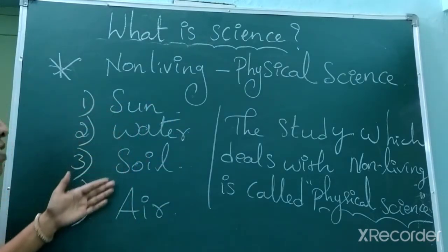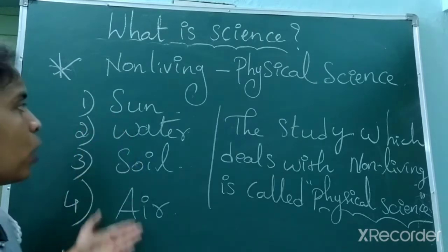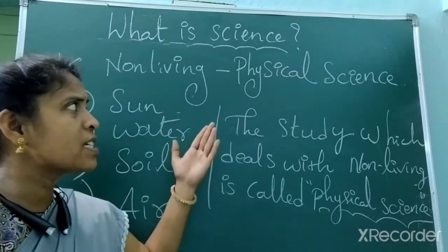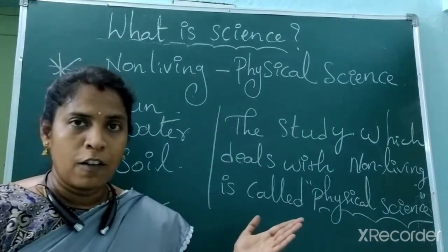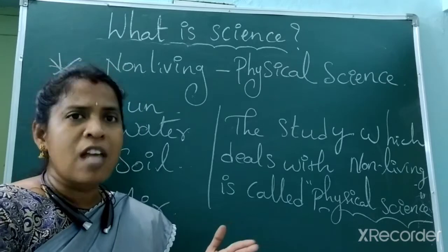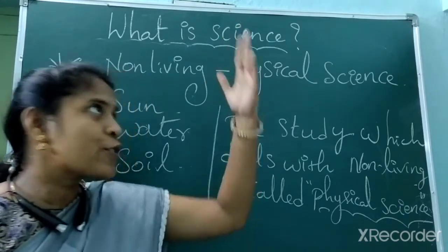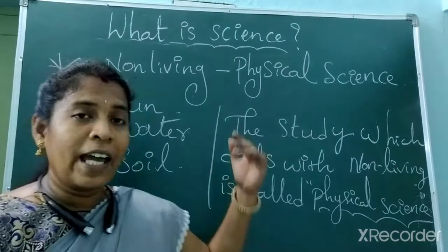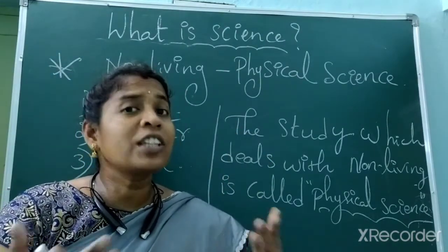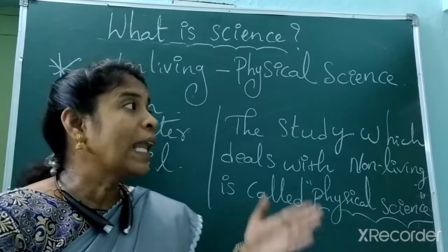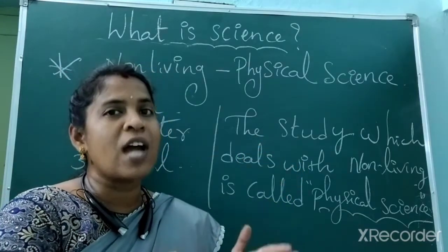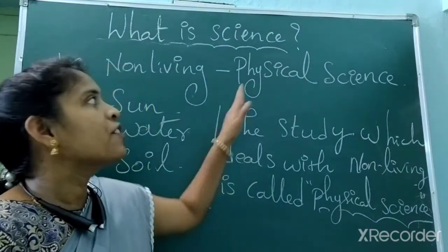In physical science, different things are studied. Physical science is again classified into two types: physics and chemistry. In physics, we study about sound, motion, and the solar system. In chemistry, we study about different chemicals and non-living things. Where we study about different non-living things is called physical science.